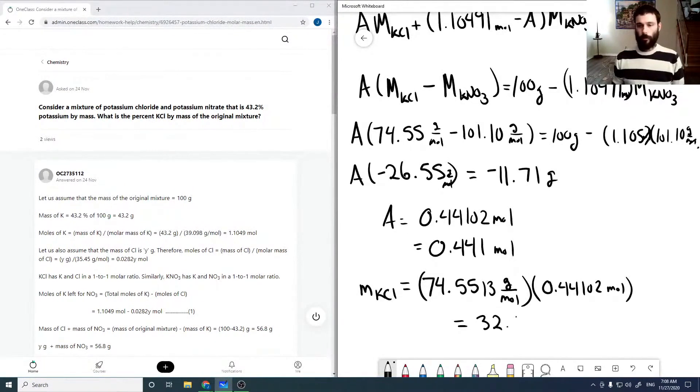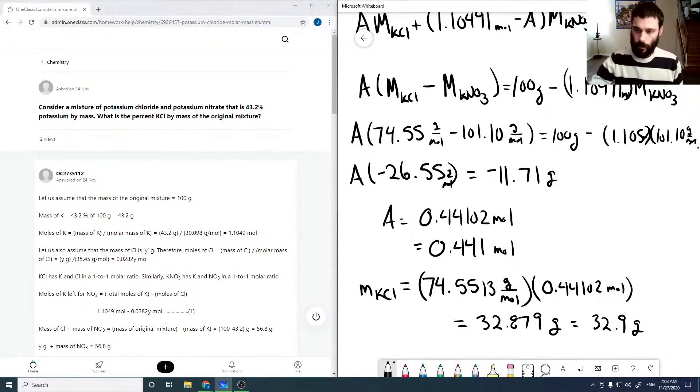Again, just keeping all the digits while I do the calculation and then doing the rounding after, which equals 32.879 grams, or about 32.9 grams. So there's our mass amount in our 100 gram sample.